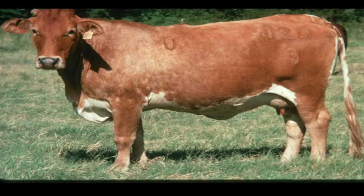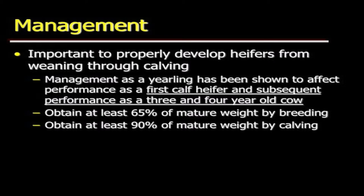Another Beefmaster cow — just a nice, complete female. It's important to properly develop heifers from weaning through calving. Management as a yearling has been shown to affect performance as a first-calf heifer and then subsequent performance for the next two to three calves thereafter. If you don't start them off on a good foot, it can be a challenge for them to catch up for several years after. Target weights we shoot for in developing replacement females are at least 60–65% of their mature weight at breeding, and then about 90% of their mature weight at calving.